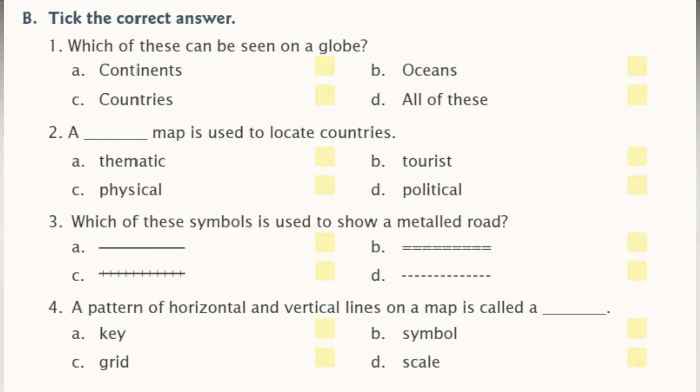A dash map is used to locate countries. Options are thematic, tourist, physical, or political. Answer is political map.